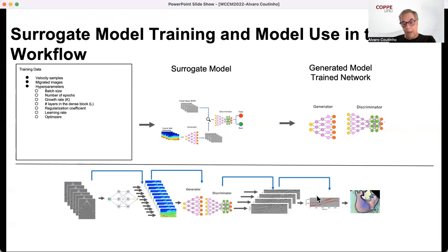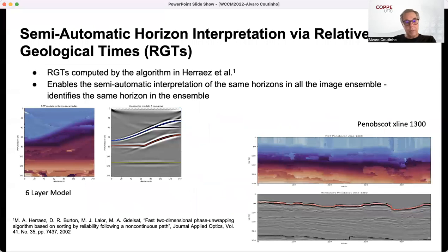Now we have to go to the last stage, which is the semi-automatic interpretation of our quantities of interest. The question here: usually the interpreter needs to locate some horizons in the images. Our problem here is we have to figure out a way to give the same horizon in all the ensembles. We do this through a method called relative geological time, RGTs, which are computed by an algorithm, as you can see here, which enables the semi-automatic interpretation of the same horizon in all the images ensemble.